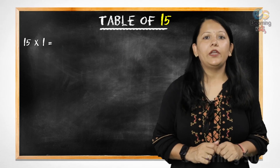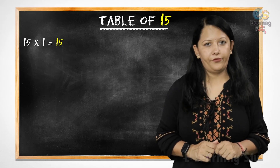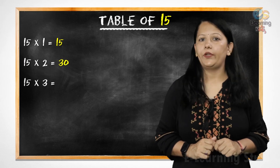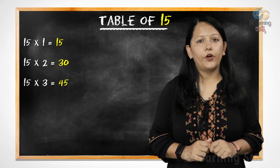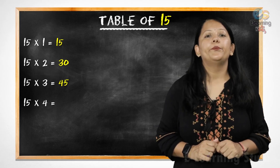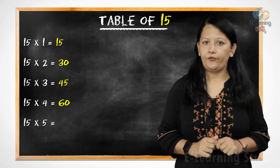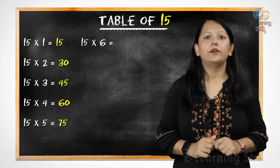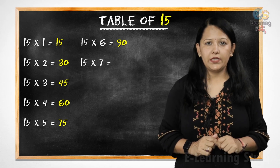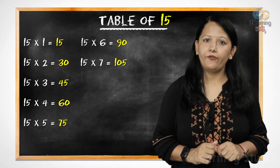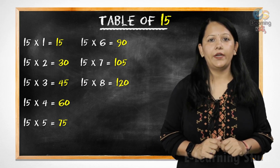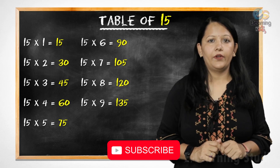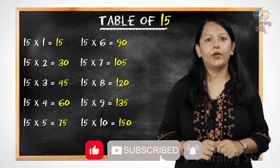Now, let's revise it. 15 ones are 15. 15 twos are 30. 15 threes are 45. 15 fours are 60. 15 fives are 75. 15 sixes are 90. 15 sevens are 105. 15 eights are 120. 15 nines are 135. 15 tens are 150.